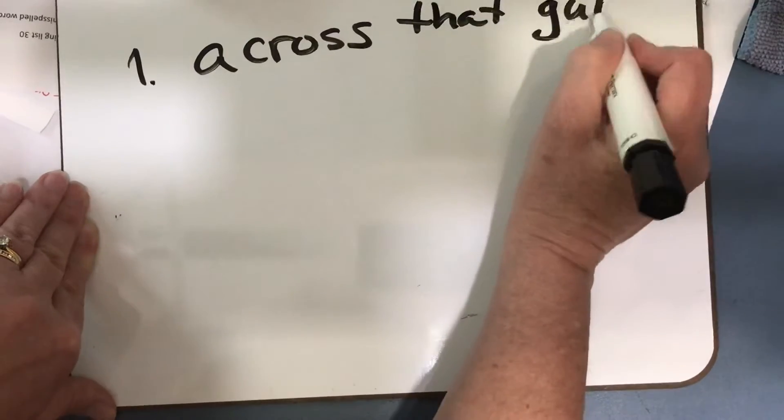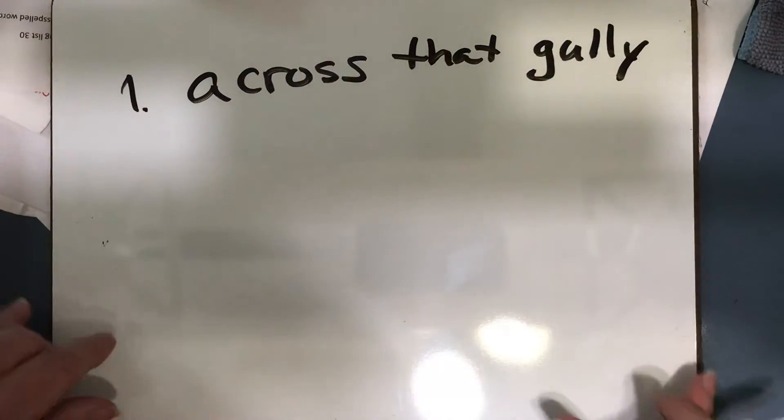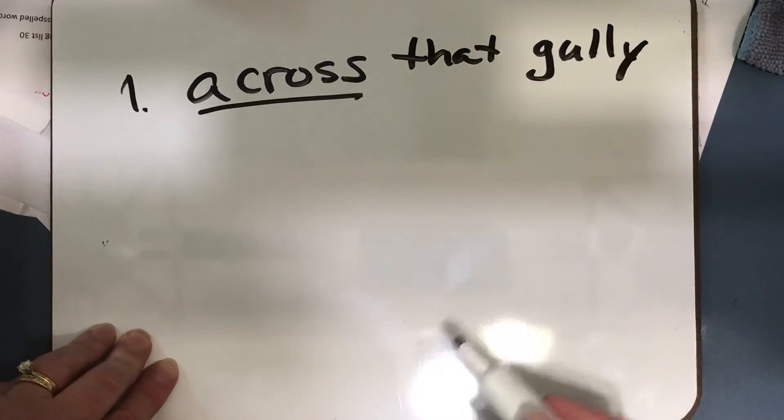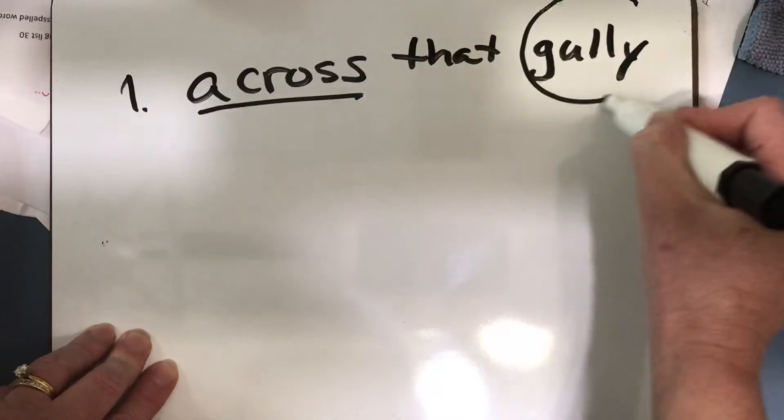Okay, and then it says to underline the preposition, that's across, and circle the object of the preposition. That's the noun. That's the last word. Gully.